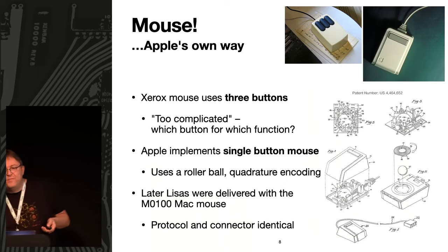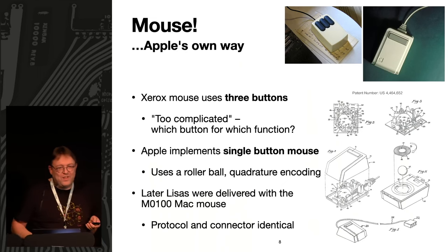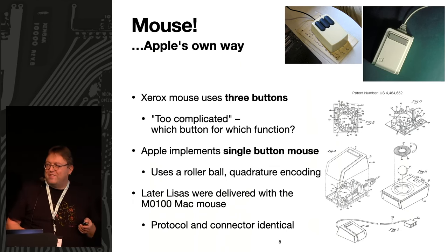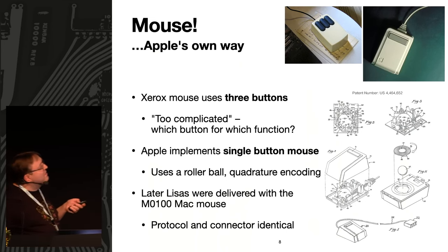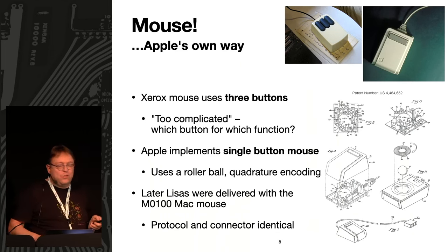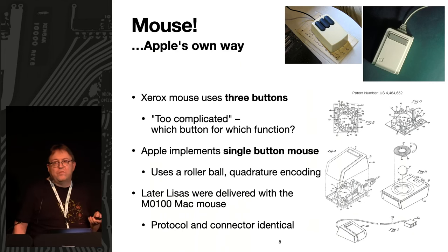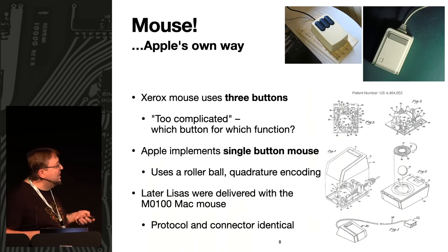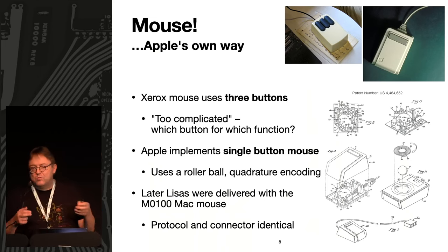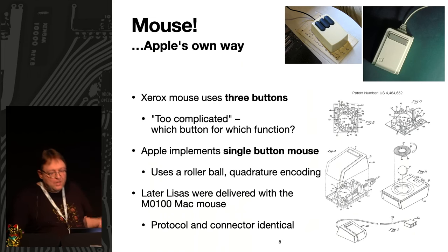Interestingly, if you look at the Lisa schematics, three mouse buttons are actually supported in hardware — so they weren't completely sure about the decision. I need to try connecting a three-button mouse to see if it works. The first mouse was square, about the size of a pack of cigarettes — not very ergonomic. Later Lisas were delivered with the same mouse used for the first Macintosh. The protocol and connector are identical, and Atari ST and Amiga mice also work on the same principle — you just need a plug adapter.